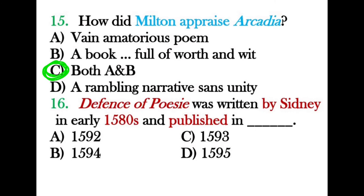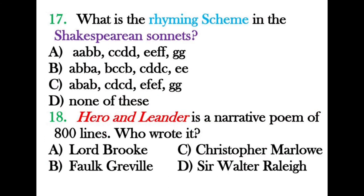Defense of Poesie was written by Sidney in the early 1580s and published in 1595. Question seventeen: What is the rhyming scheme in Shakespearean sonnets? The Shakespearean sonnet follows the pattern ABAB, CDCD, EFEF, and then GG — a couplet at the end.